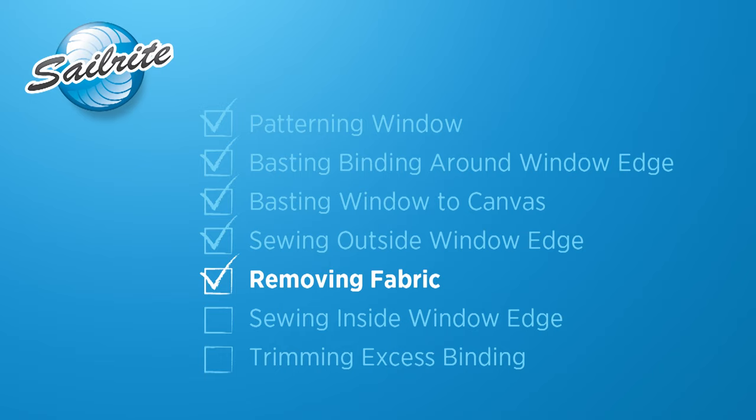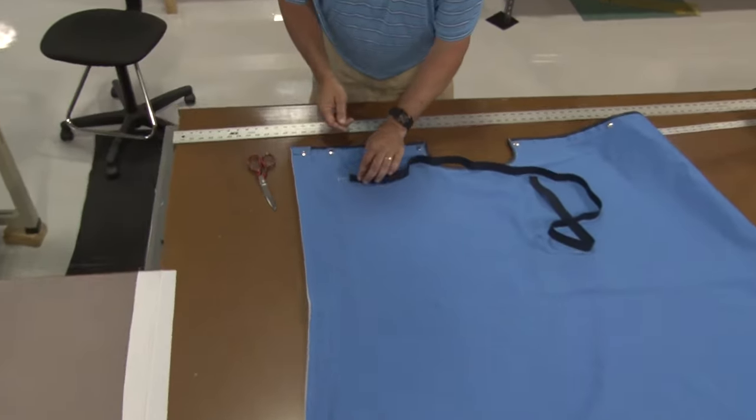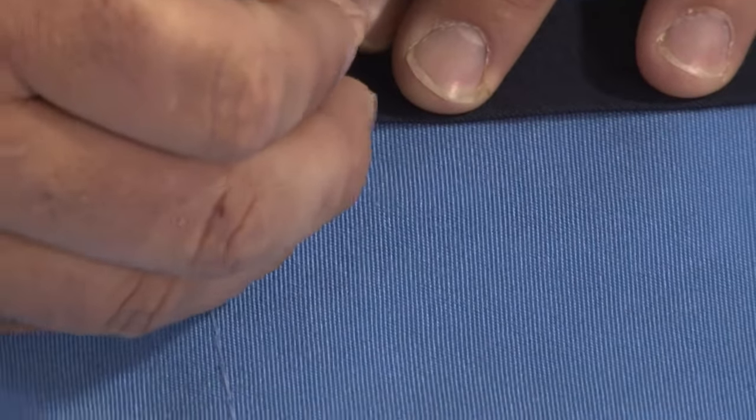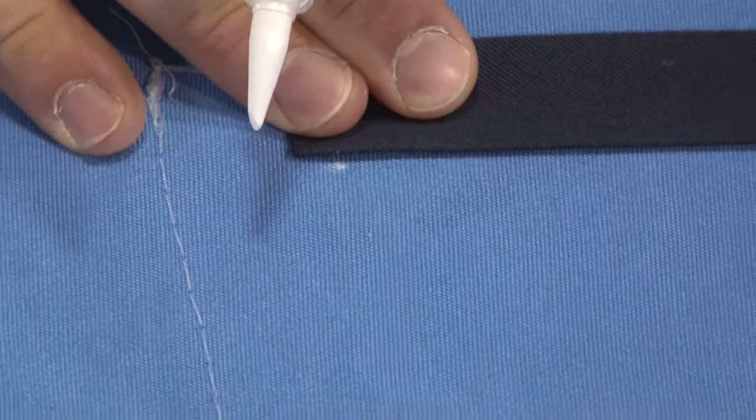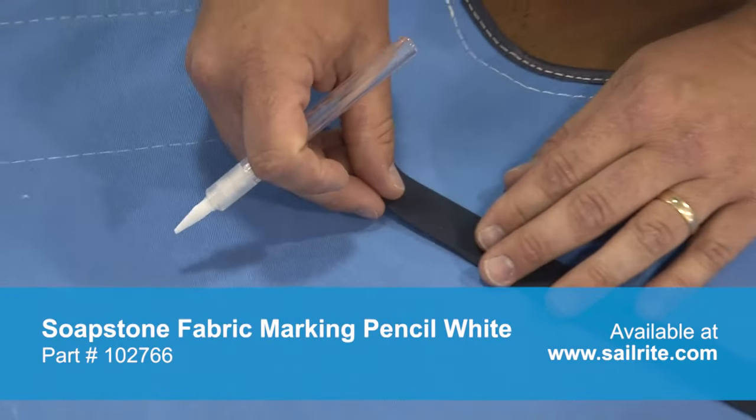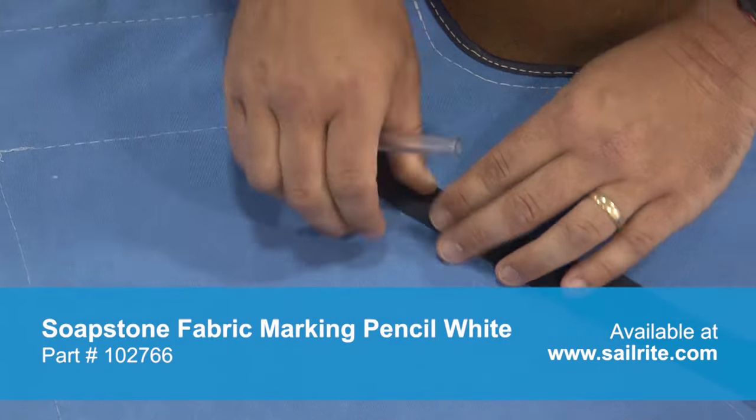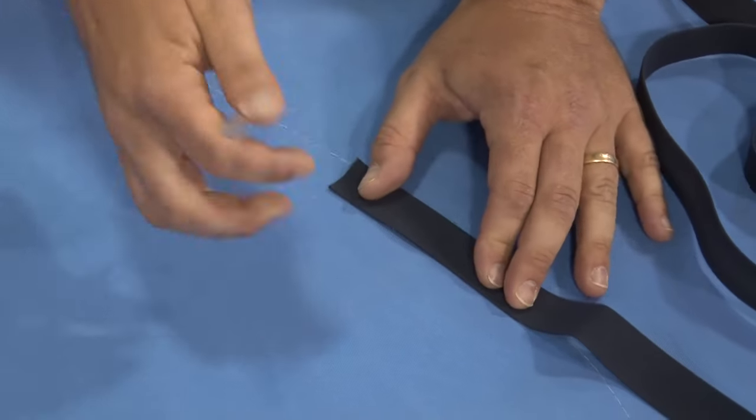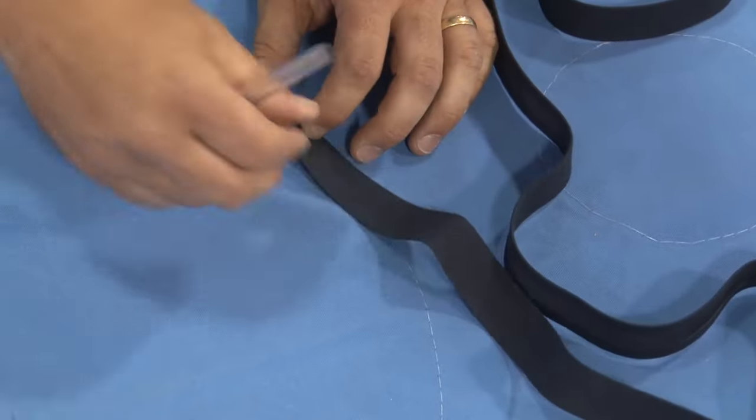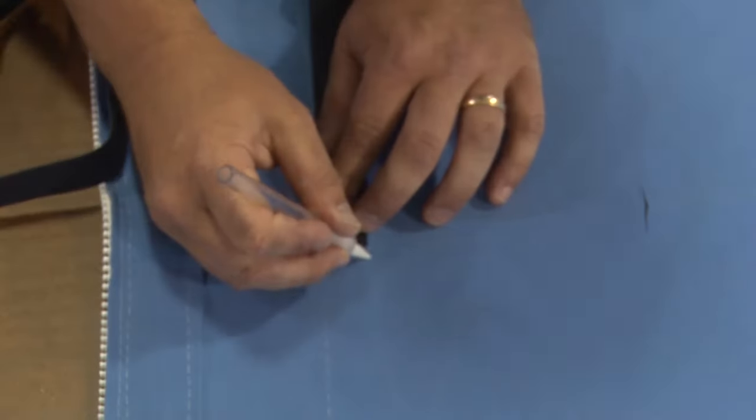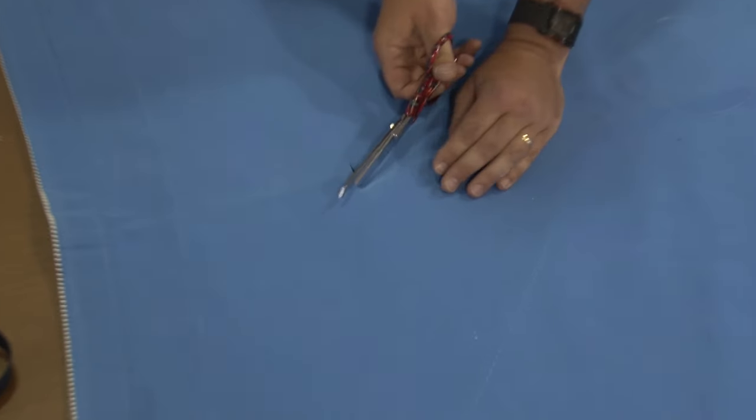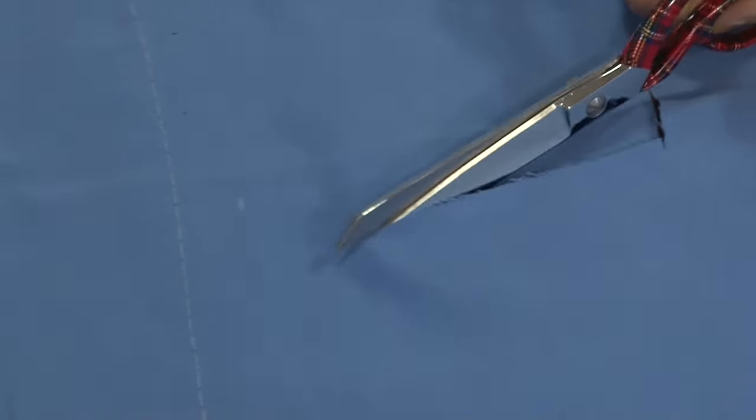All right, now we're done. We will not put that second stitch in yet. We're going to turn the canvas over. This is actually the outside surface, and we're going to put marks on the canvas just to gauge where the bias binding will be placed on this side as well. We used an opposite color bias binding. Obviously, if you choose to use the same color, it will blend in a little bit nicer with the canvas. But Brian has chosen to use the sky blue Sunbrella with a navy blue Sunbrella as an offsetting color.